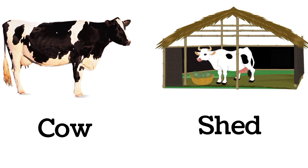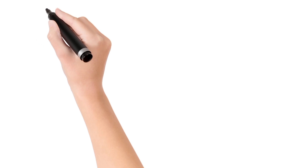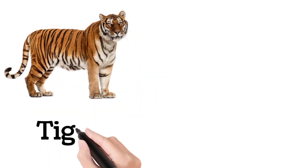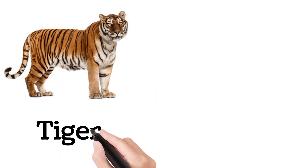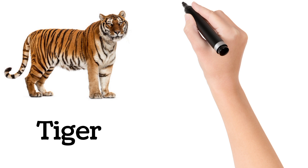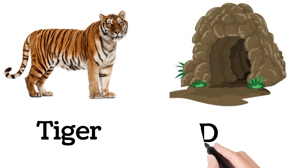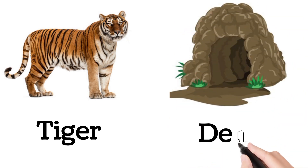Cow. Cow lives in a shed. Tiger. Tiger lives in a den.